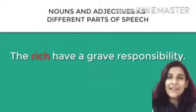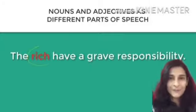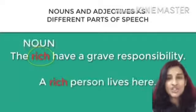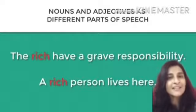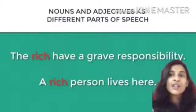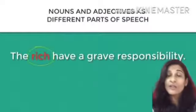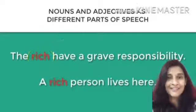Another example: 'The rich have a grave responsibility.' Here, 'the rich' is acting as a subject — it's a noun. In contrast: 'A rich person lives here' — the word rich is describing that person, so it's an adjective.